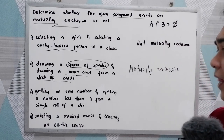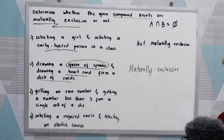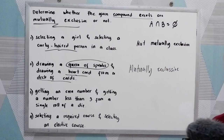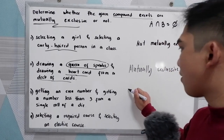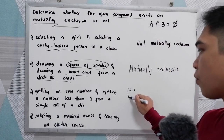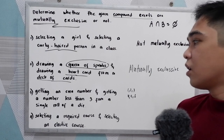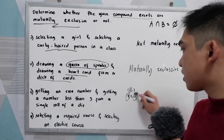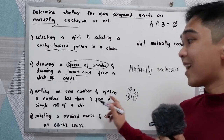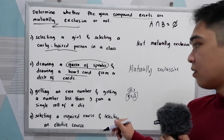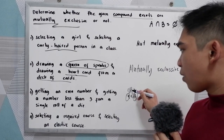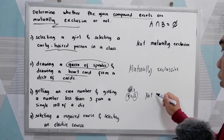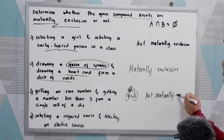Number three: getting an even number and getting a number less than three from a single roll of a die. In a single roll of a die, we have one, two, three, four, five, six. The even numbers are two, four, and six. Getting a number less than three gives us one and two. Our common element is two, so that is not mutually exclusive.